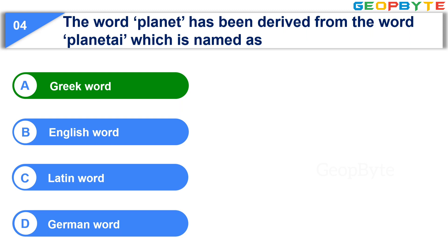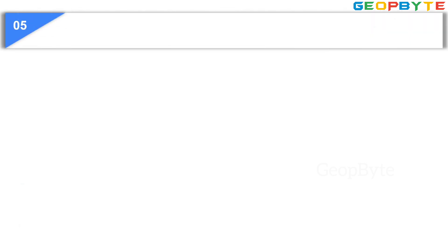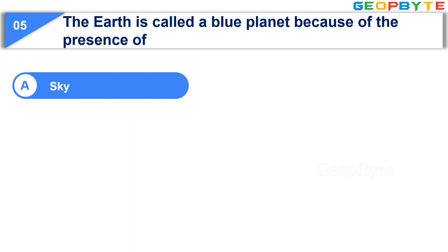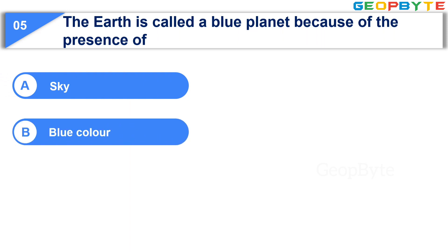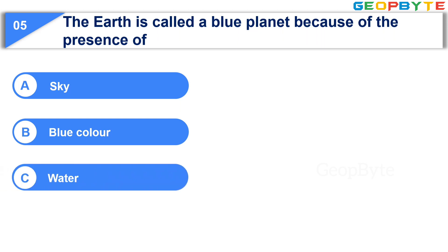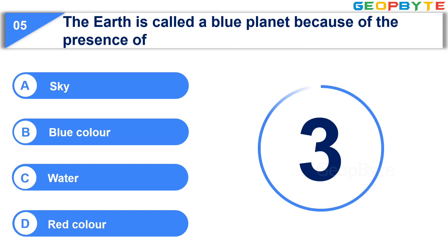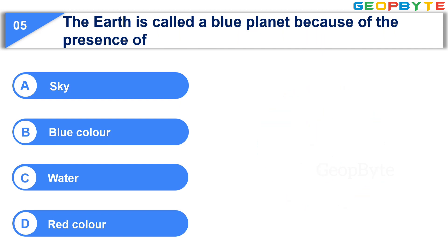The fifth question is: The Earth is called a blue planet because of the presence of — Option A: Sky. Option B: Blue color. Option C: Water. Option D: Red color. Your time starts now. Your time is up and the correct answer is Option C: Water.